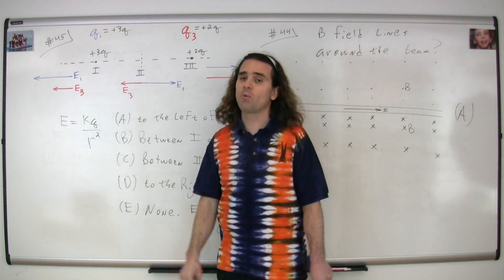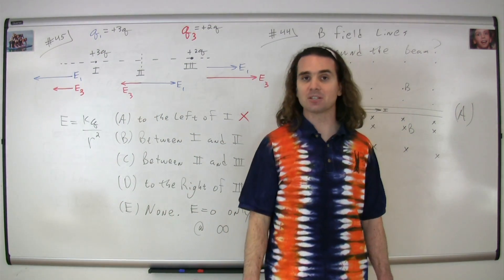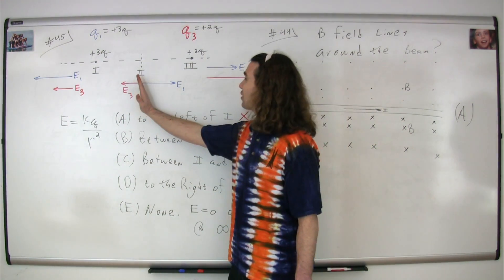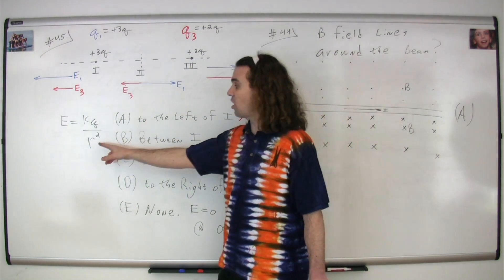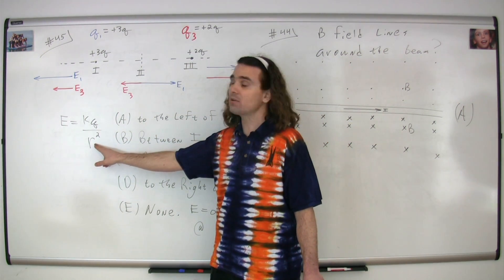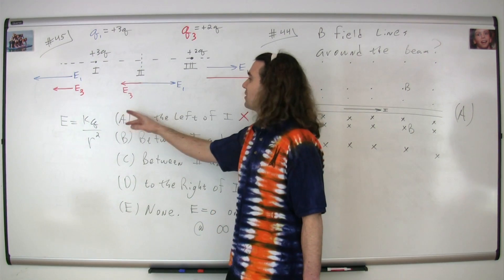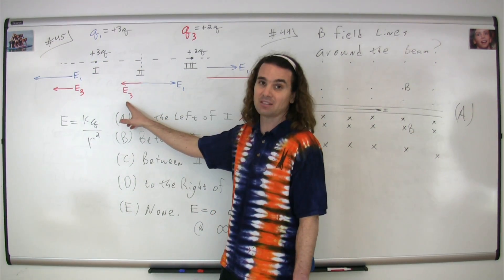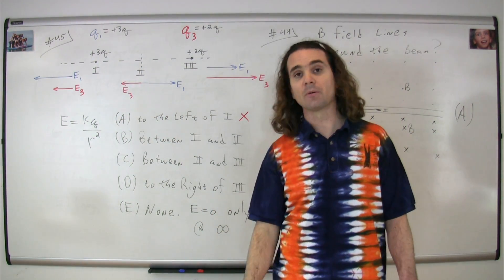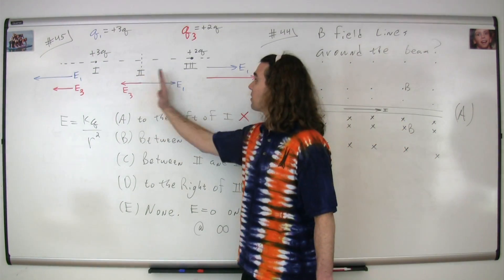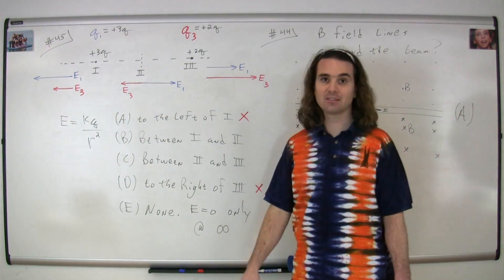In order to reach a point where these two electric fields have the same magnitude in opposite directions, we have to get closer to charge three, so that the r value for charge three is smaller and larger for charge one. This way, the electric field from charge three will have the same magnitude as the electric field from charge one. Therefore, the correct answer is somewhere between point two and charge three. The correct answer is C.